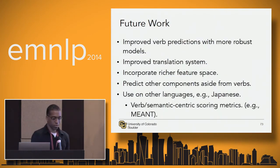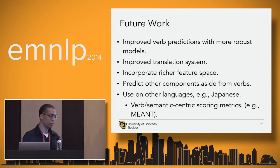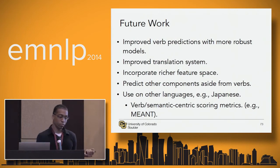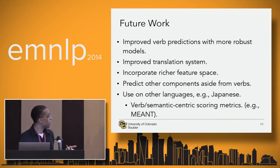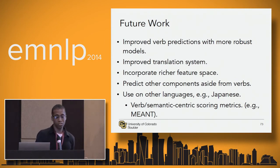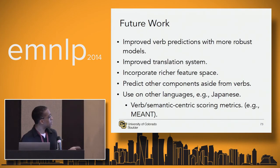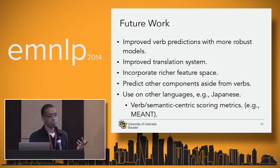For future work, we'd like to do better with our verb predictions and use a more sophisticated translation system. We'd like to incorporate a richer feature space to make more informed decisions and predict things other than verbs. We'd also like to try this for languages such as Japanese, for which BLEU is generally not a great idea, and maybe use more semantic-centric metrics like METEOR.